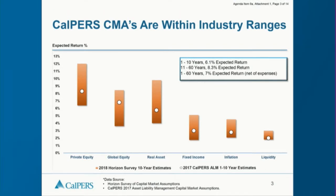Also important: during the 2017 asset and liability management workshop, we formulated our expected return for the next 10 years at 6.1 percent, not 7 percent. From year 11 to year 60, our expected return is 8.3 percent. If you average the first 10 years with years 11 through 60, it comes out to 7 percent for the next 60 years. But for the next 10 years, our expected return is 6.1 percent, not 7 percent.